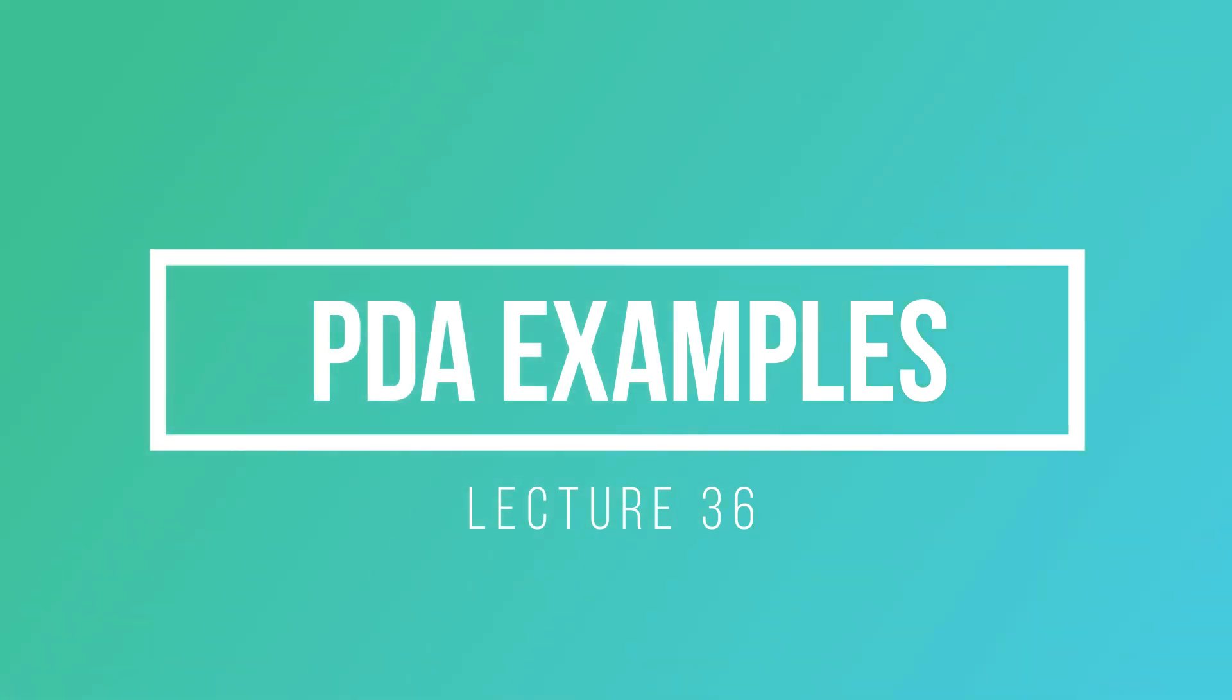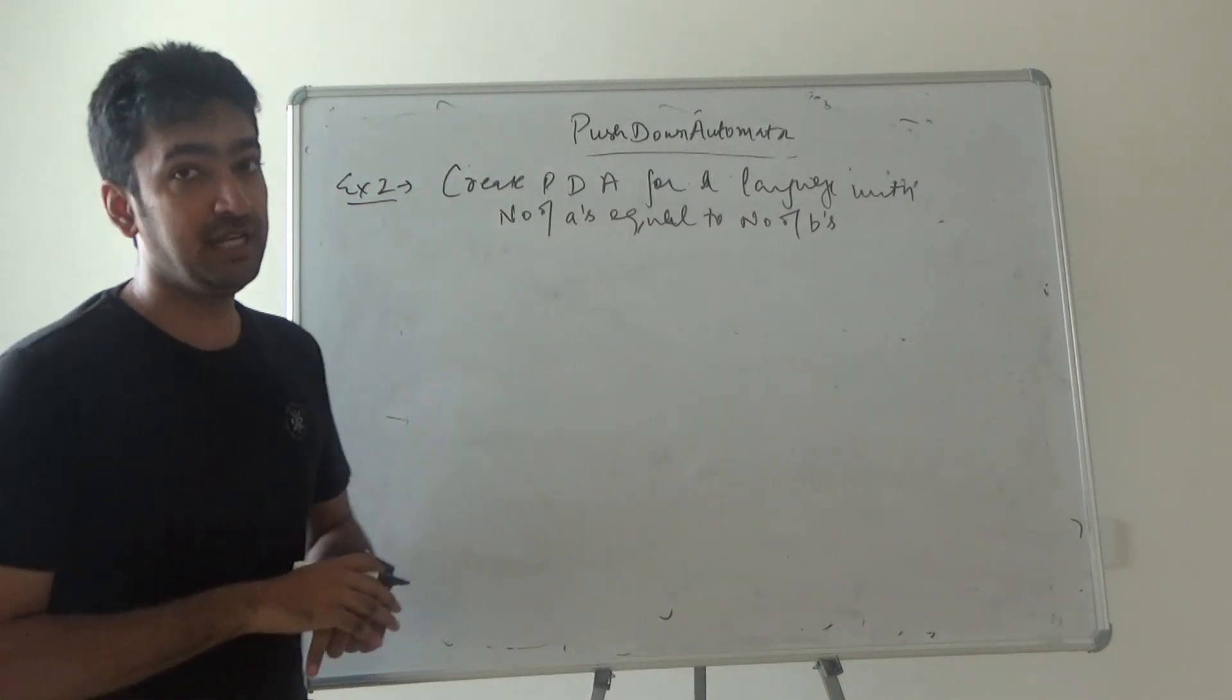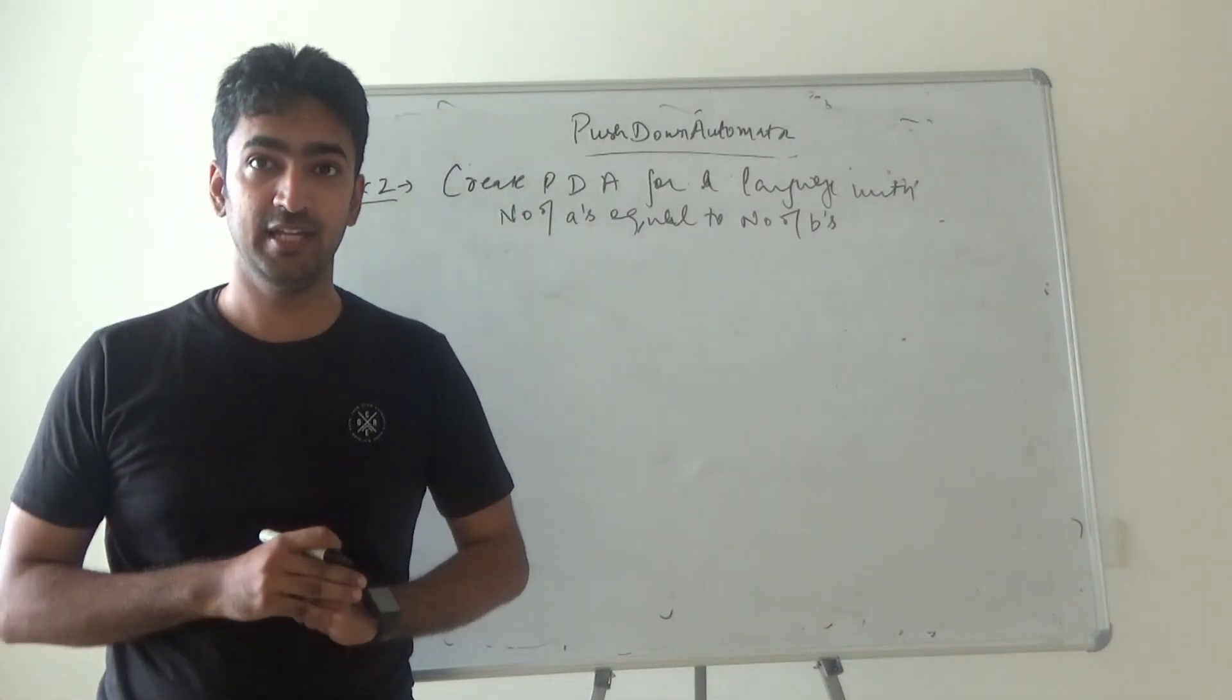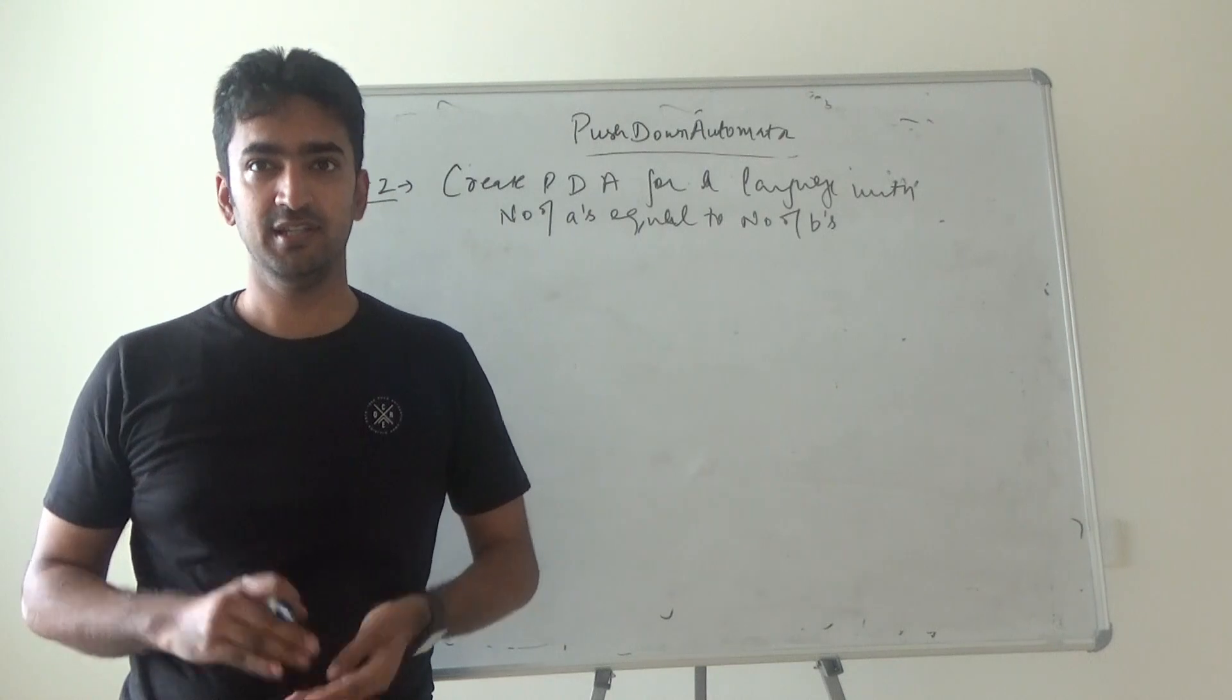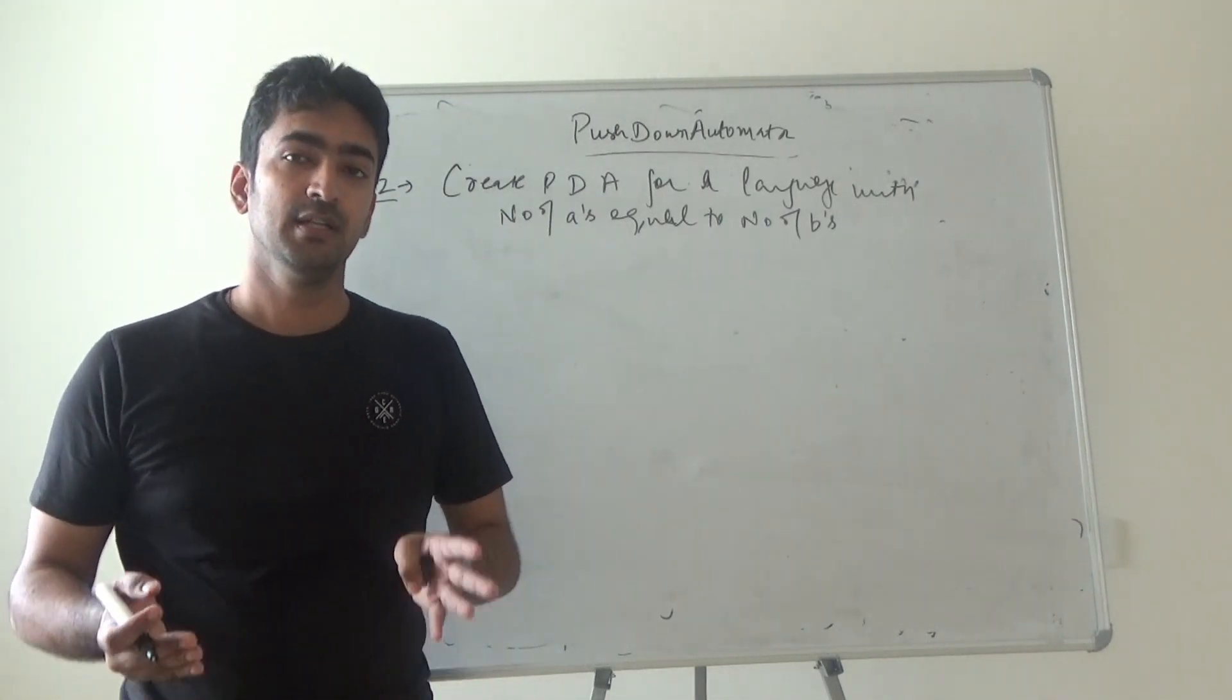Hello guys, hopefully everyone is fine. I'm coming with another example - this is example number two for constructing a PDA with equal numbers of a's and b's. The question says you have to create equal numbers of a's and b's.